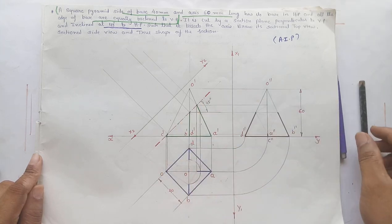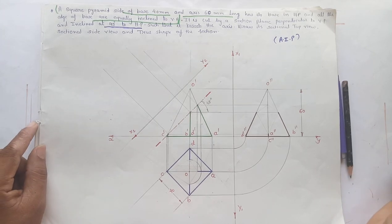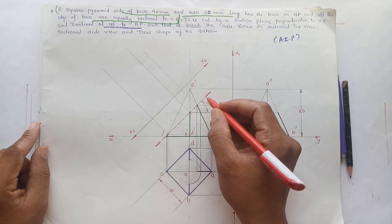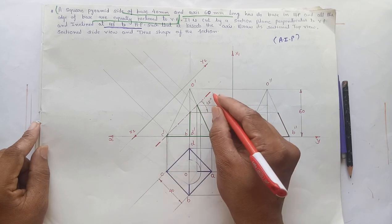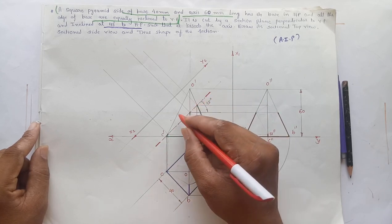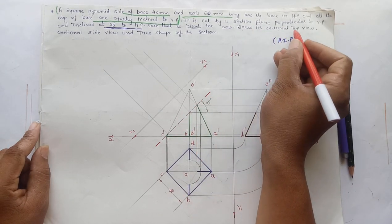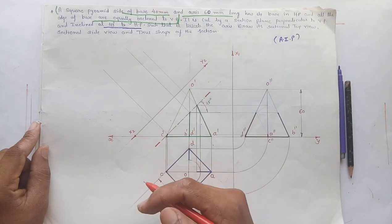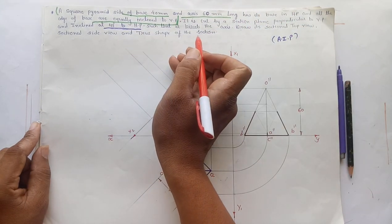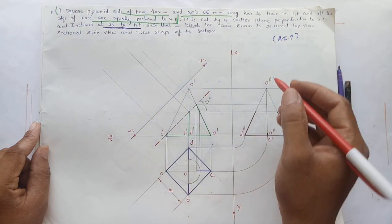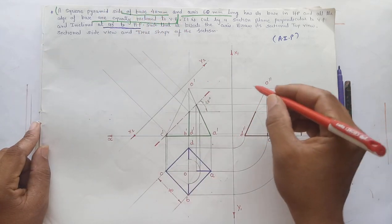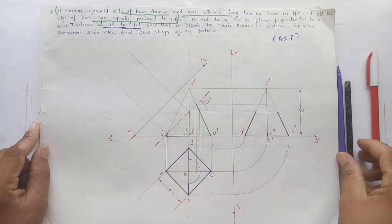After taking the cutting plane, we show it using a cutting plane line — the line name is long chain thick at the ends and thin in between. After showing the cutting plane, we have to draw: its section in the top view, section in the side view, and the true shape of the section. First, let me draw the side view of the object.